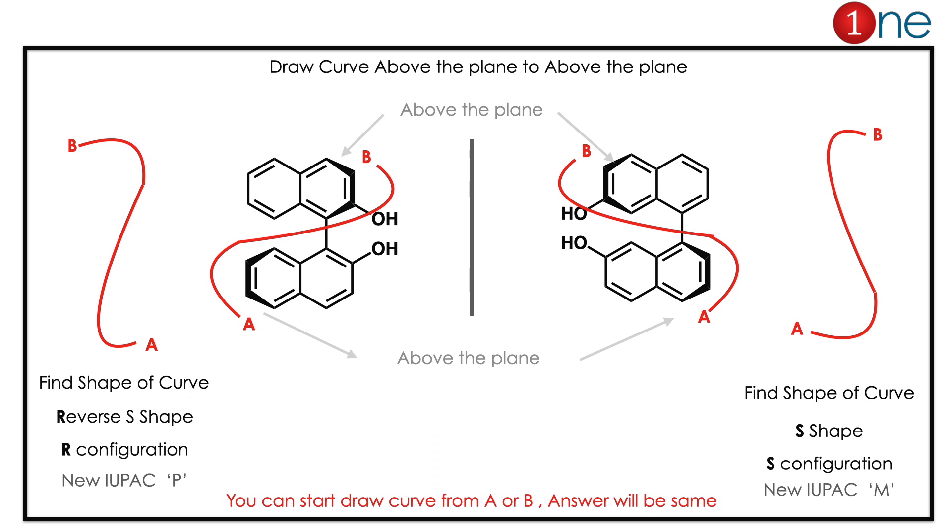Let us start from the left one. The left one has above atom A and below atom B. You can start from either way; the answer will be the same. If you go from A to B, it is a kind of reverse S shape. If it is a reverse S shape, it means R configuration. The new IUPAC name is P.